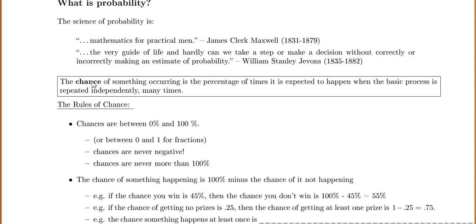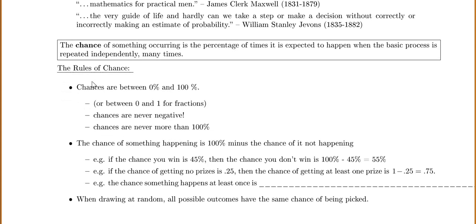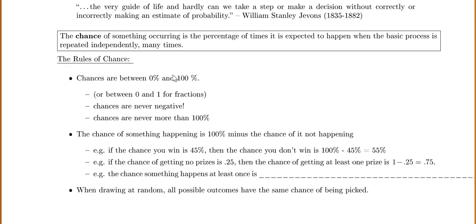There are some rules for our chances. Chances are always between 0% and 100%, or if you're using fractions or decimals, it's always between 0 and 1. Chances are never negative and never more than 100%. The chance of something happening is 100% minus the chance of it not happening.